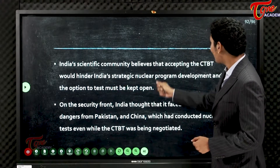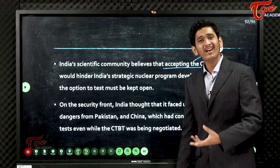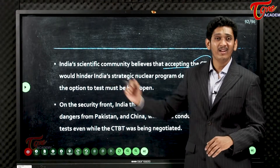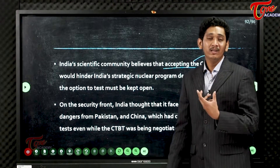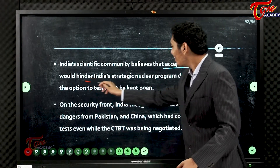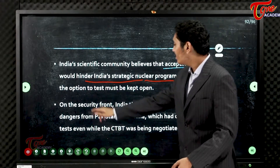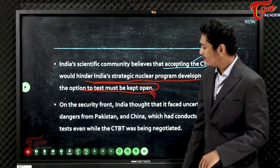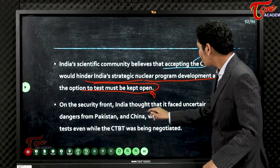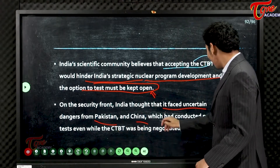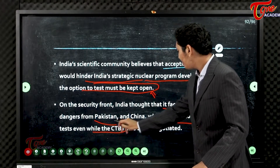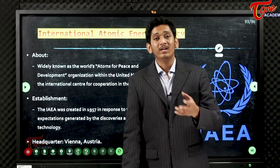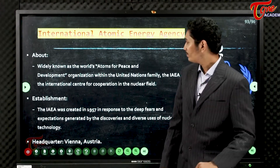India's scientific community believes that accepting the CTBT would hinder India's strategic nuclear program development, and the option to test must be kept open. On the security front, India thought it faced uncertain dangers from Pakistan and China, which had conducted nuclear tests even while CTBT was being negotiated.